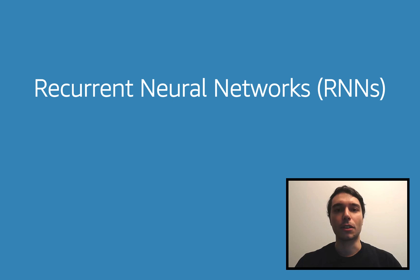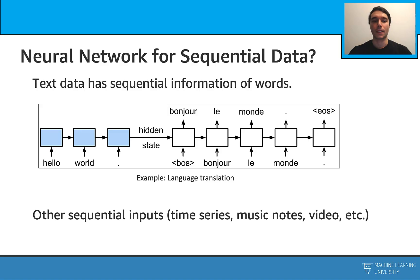In this section, we are going to talk about recurrent neural networks. Recurrent neural networks are usually used to process some sequential information. Text is a great example. In text, we have some sequential information, such as words.